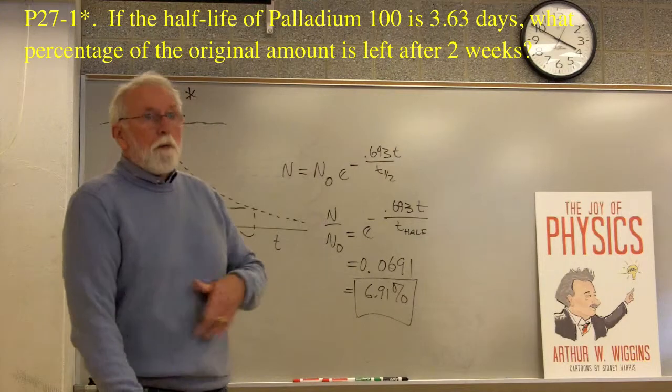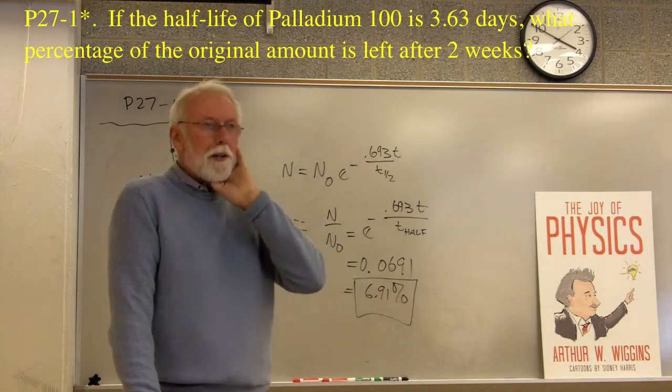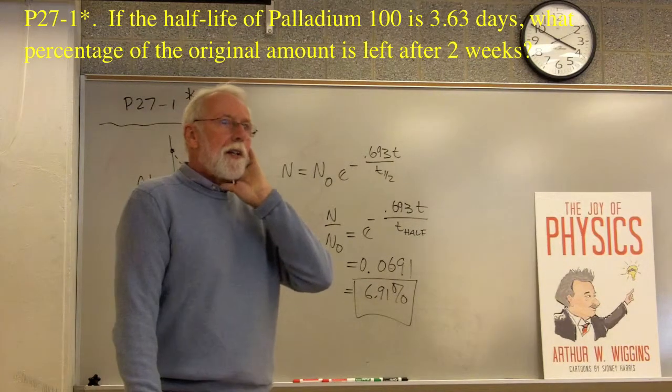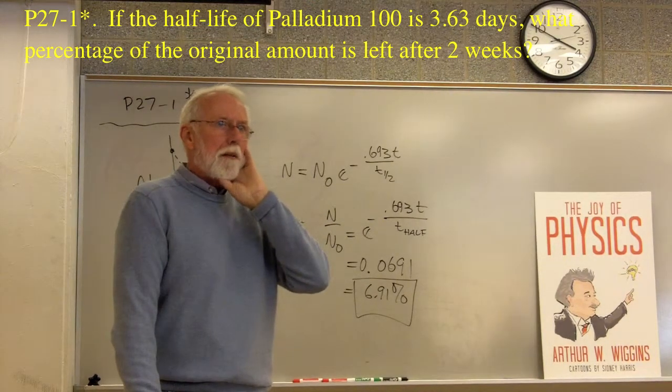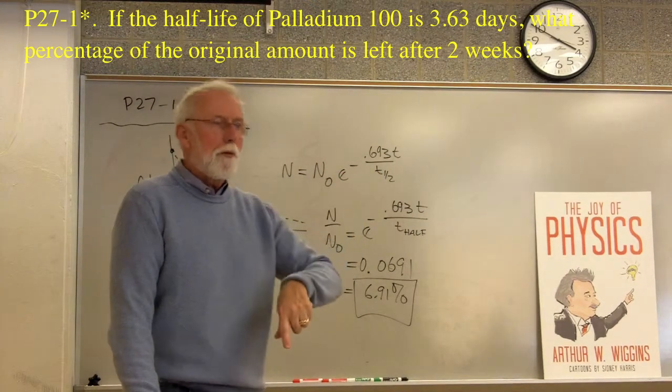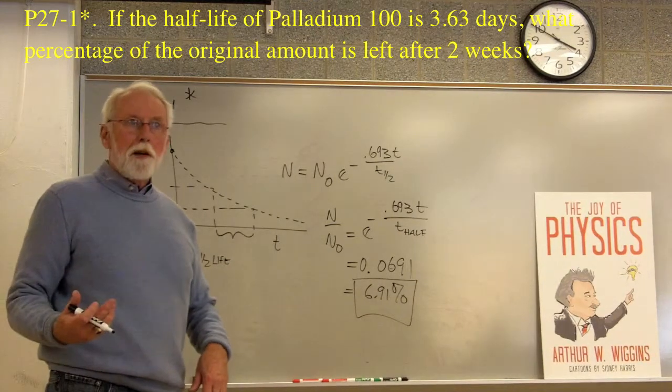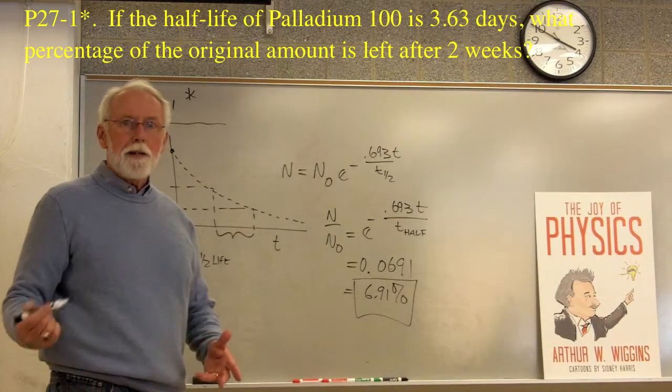So, let's see. One way you can test this a little bit is you can say, two weeks, that's 14 days. 3.63 days is the half-life. So, this is about something like four half-lives. So, it'll be 50%, 25%, 12 and a half, 6 and a quarter. So, it's about like that, six and something percent. So, it's about four half-lives, and that kind of makes sense.